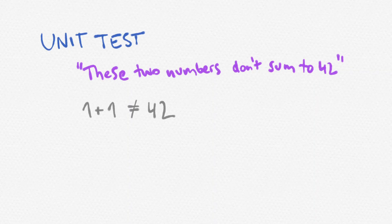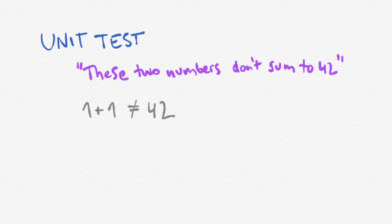The basic difference between property based testing and unit testing is that in unit tests you usually provide and hardcode specific examples, specific inputs that you want to test, and then do something about them.